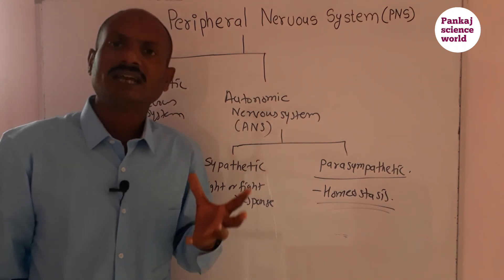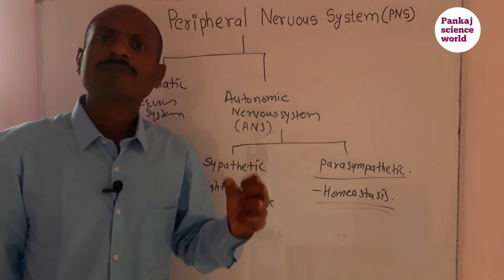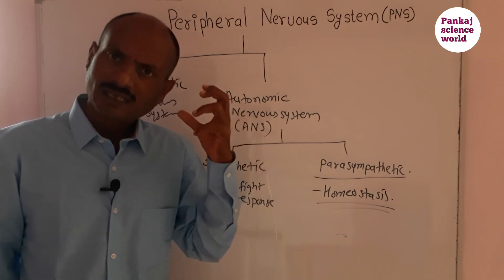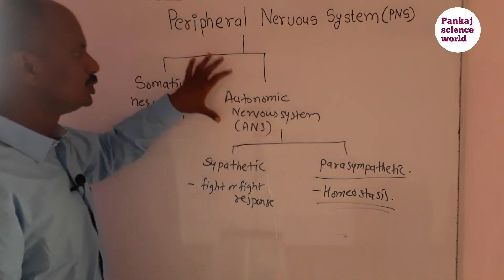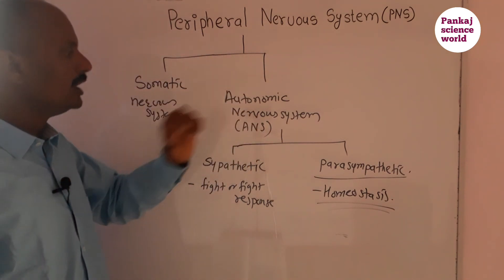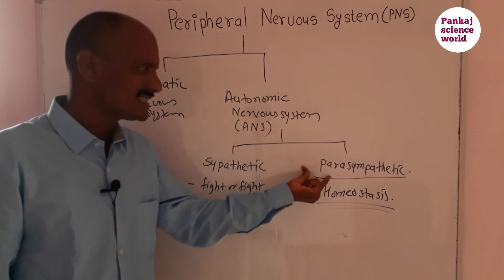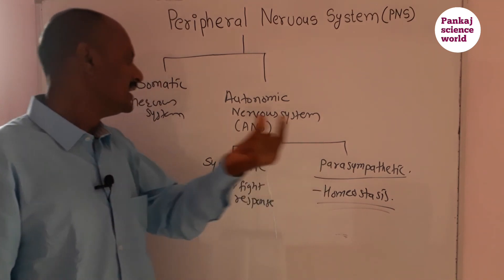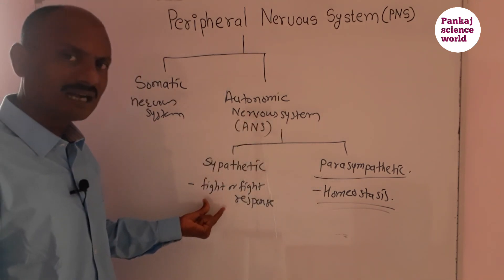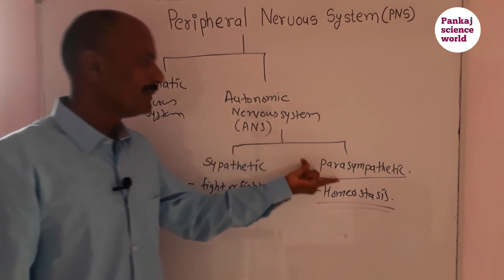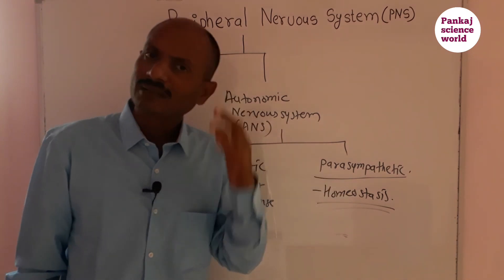These autonomic activities — heartbeat, respiration, blood circulation, digestion, and sexual arousal — are all under the control of the autonomic nervous system. It has two parts: the sympathetic nervous system, which works in critical conditions, and the parasympathetic nervous system.